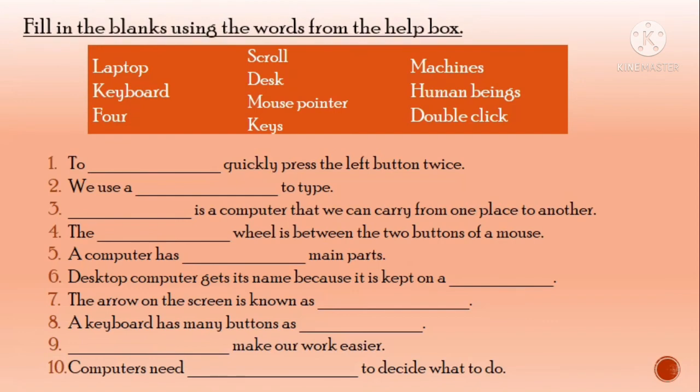Next question, fill in the blanks using the words from the help box. Here you have a box with some words to place in the blanks. Number one, to dash quickly press the left button twice. When we press the left button twice, this is double click. Number two, we use a dash to type, so we use a keyboard. Number three, dash is a computer that we can carry from one place to another, which is a laptop. Number four, the dash wheel is between the two buttons of a mouse, which we call scroll. Number five, a computer has dash main parts, so this computer has four main parts. Number six, desktop computer gets its name because it is kept on a dash, which is a desk. Number seven, the arrow on the screen is known as mouse pointer. Number eight, a keyboard has many buttons as keys.